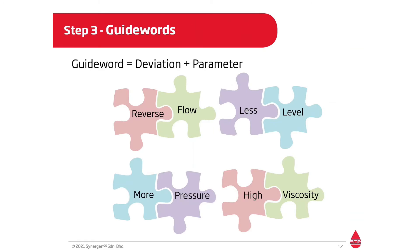In step number three, we define the guide words, which are formed by the combination of deviations and parameters. Deviations are abnormal conditions, whereas parameters refer to system characteristics. By combining them, we wind up with guide words such as reverse flow, more level, high pressure, and less temperature.